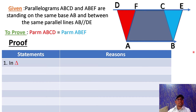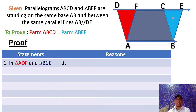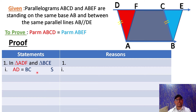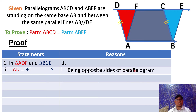In statement number one, consider triangle ADF and triangle BCE. First, you see here AD and BC. AD is equal to BC. So in statement one, you can write AD equals BC. What is the reason? You know ABCD is a parallelogram, so these two sides are the opposite sides of the parallelogram, and they are always equal. So the reason is: being opposite sides of parallelogram.